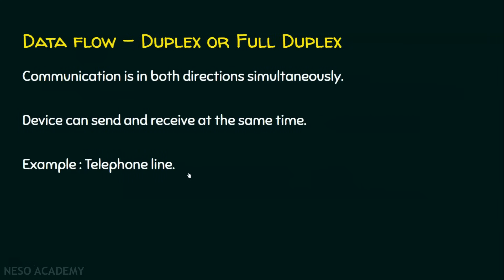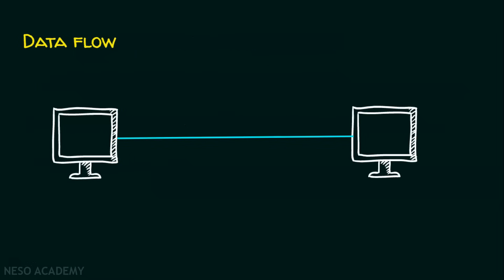Now we shall see what is full duplex. In half duplex, communication happened in both directions but not at the same time. Whereas in full duplex, communication can happen in both directions simultaneously — devices can send or receive data at the same time. Example: telephone line. We can talk as well as listen simultaneously in a telephone line.